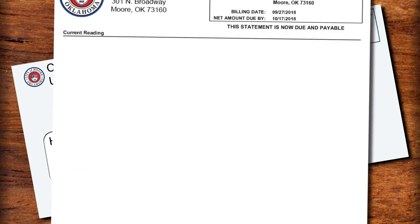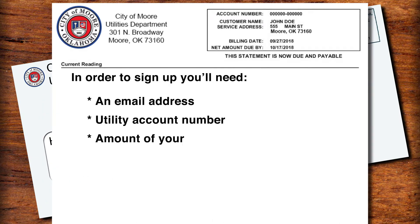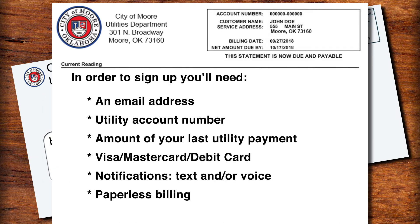To recap, in order to sign up for online utility payment, you'll need an email address, your utility account number, and the amount of your last utility payment. You can use Visa or MasterCard for payment, and you can sign up for text or voice notifications and paperless billing. Finally, if you need help with any part of the sign-up process, you can find help at the City of Moore — just give us a call. We're here Monday through Friday, 8 to 5, and our phone number is 405-793-5032.